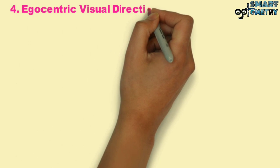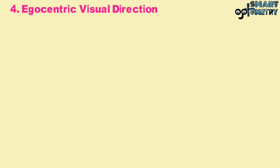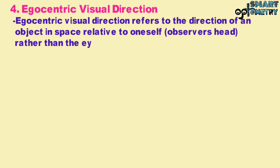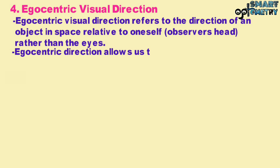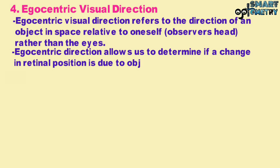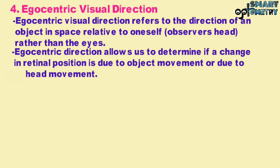Fourth, egocentric visual direction. Egocentric visual direction refers to the direction of an object in space relative to oneself — that is, the observer's head rather than the eyes. Egocentric direction allows us to determine if a change in retinal position is due to object movement or due to head movement.